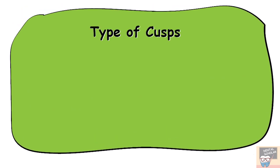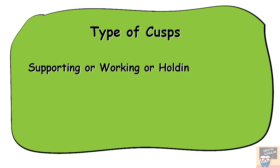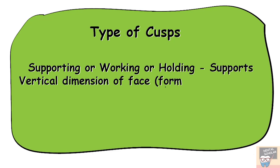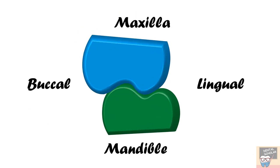Let's see the different types of cusps on a tooth. First, the supporting, working, or holding cusps. These support the vertical dimension of the face by forming the occlusal stops. As you can see in this picture, the maxillary palatal and mandibular buccal cusps are the supporting cusps.